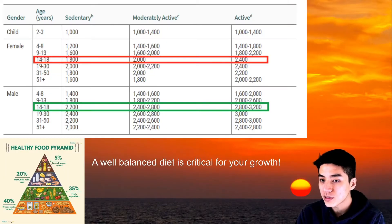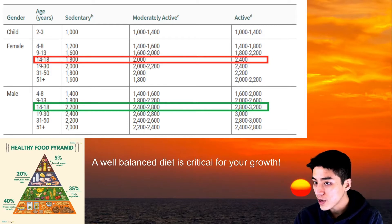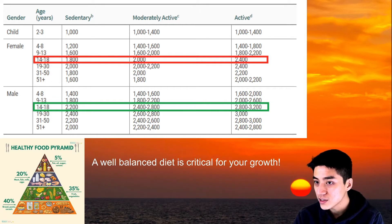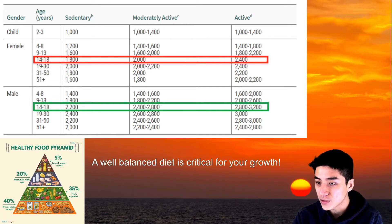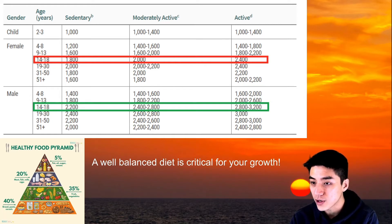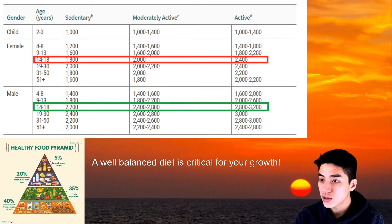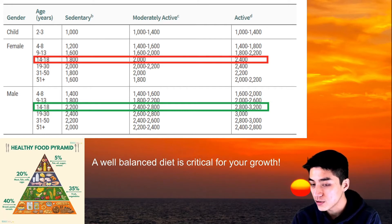To all my students out there listening, your age group demands the most calories per day. You can see there in the red box for females between the ages of 14 to 18, it's divided into three categories: sedentary, moderately active, and active. Those numbers represent the calories you need per day. So if you're an active person — you do cheer, lacrosse, basketball, swim, or water polo — you're going to need 2,400 calories per day to sustain your growth.